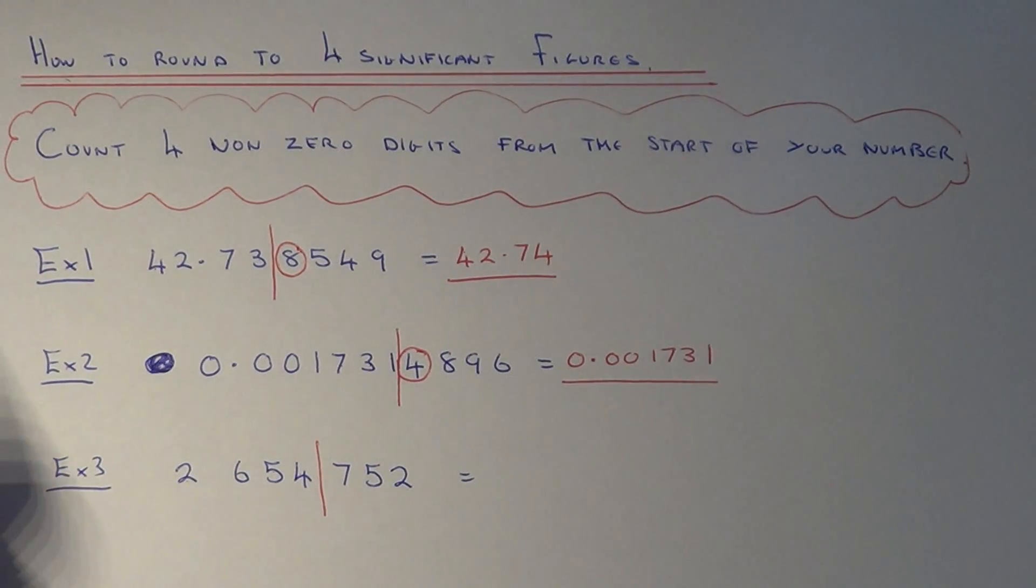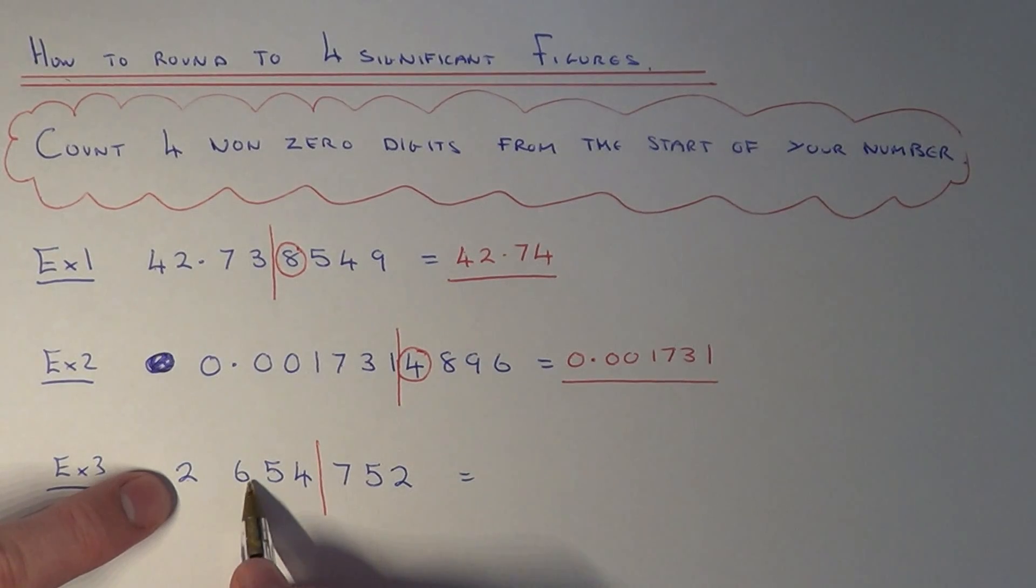We're cutting the number off here. We've got two choices this time. It would either be 2,654,000 if we round it down, or if we round it up it would be 2,655,000.